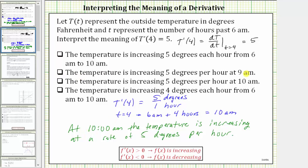The second sentence indicates a time of 9 a.m., which cannot be correct. Looking at the third choice, the temperature is increasing five degrees per hour at 10 a.m. This sentence is equivalent to the sentence we stated below. And therefore, this is the correct sentence.